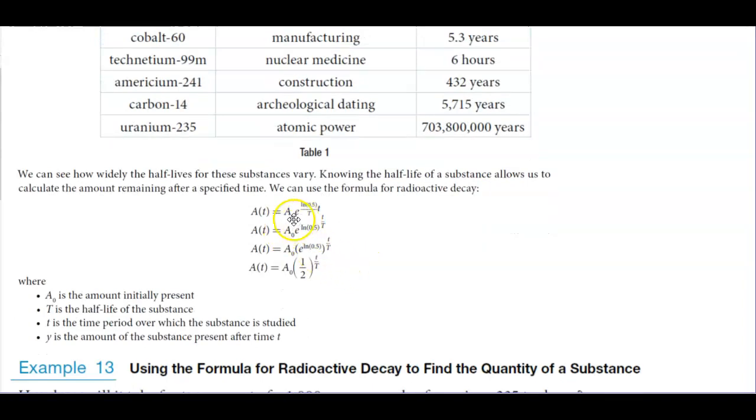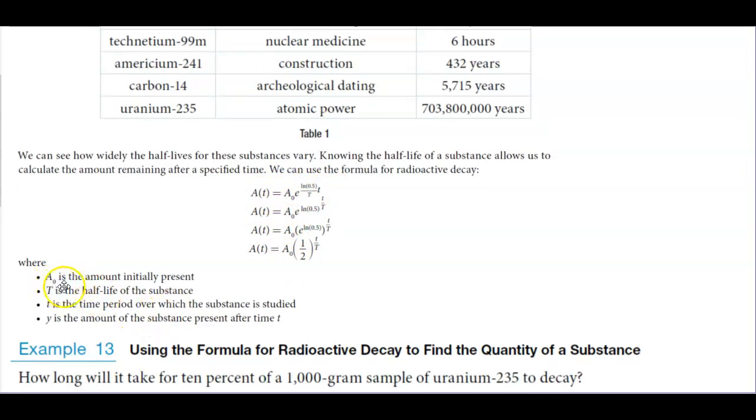So here is our function. We can use either one of these formulas, but my suggestion is to use the first one where A subscript zero is the amount initially present. So that is the initial amount.